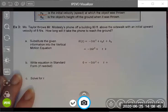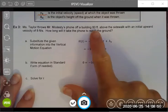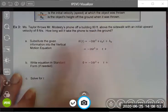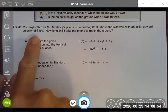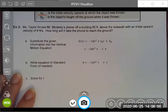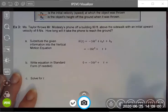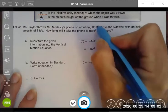Starts with Miss Taylor throwing Mr. Modesty's phone off a building 80 feet above the sidewalk with an initial upward velocity of 8 feet per second. We're going to calculate how long it will take for the phone to reach the ground. So the first thing I notice is that my initial height is 80 feet.